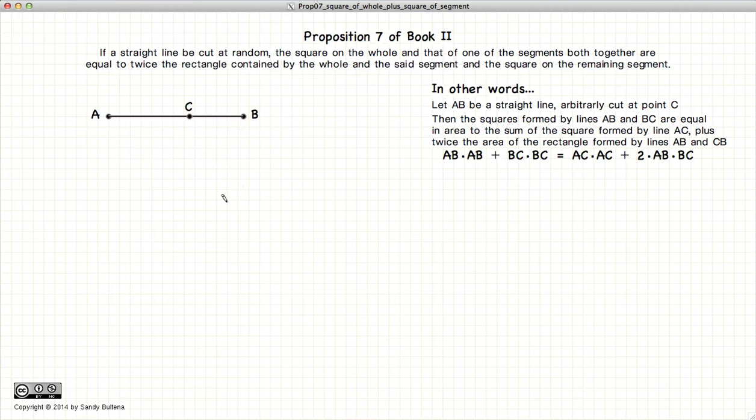will be equal to the square on AC plus twice the entire line segment AB times CB. So this area twice plus this square.